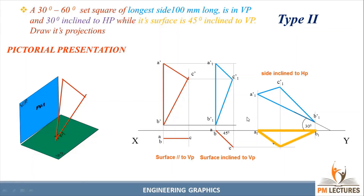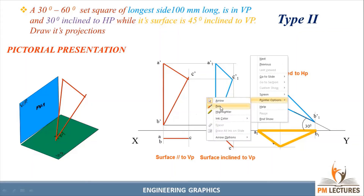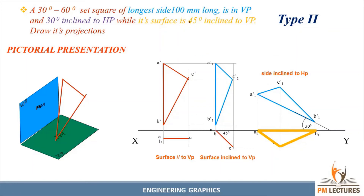Draw the final output — the darkest portion needs to be drawn clearly, while other construction lines are lighter and projection lines are very light. To summarize: first write the given data and verify whether surface inclination is given. According to the surface inclination, draw the initial position — that is step one. Here the surface inclination is given for VP, so the first step is parallel to VP. Second step is the surface inclination, and the third step is the edge inclination. Finally we get the output.